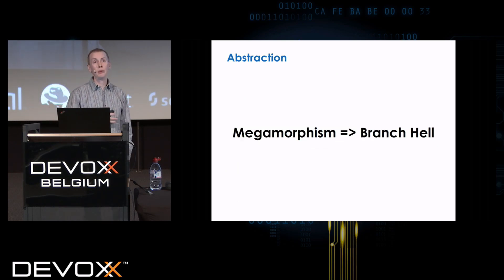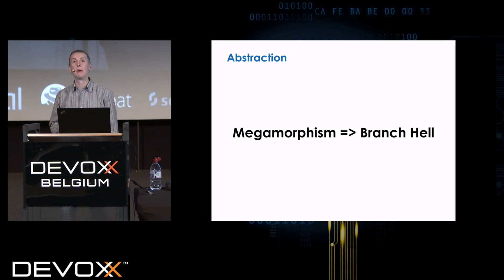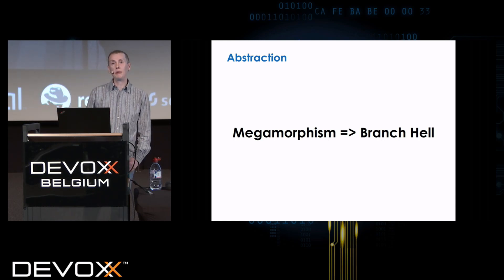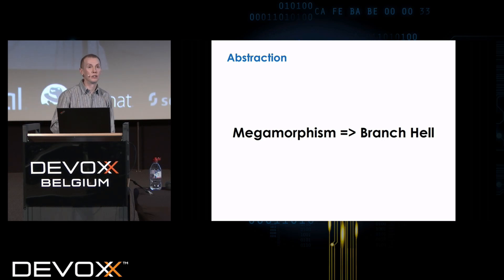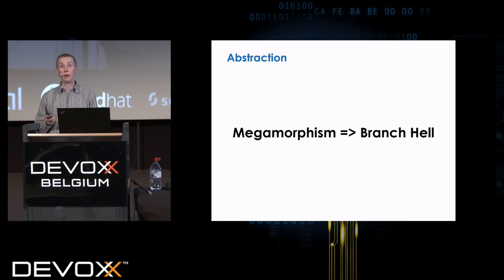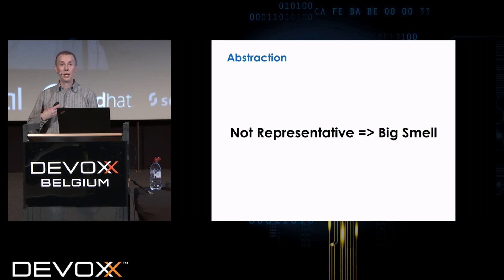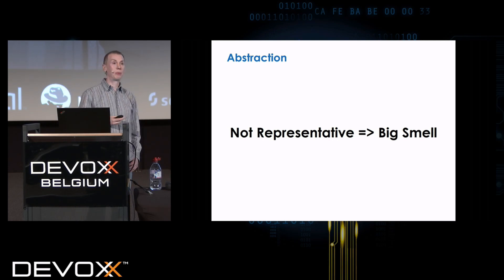If we go down the over-abstraction route, we're into a kind of interesting world where as soon as you get many of a certain type, we're into megamorphism — and this is one of the things that our compilers and hardware have quite a lot of difficulty dealing with. Once you start dealing with three or more types, it becomes really difficult — we end up with jump tables, certain optimizations become quite limited. This doesn't suit how our modern processors work. And if it's not representative, it's the wrong thing to be doing. There are so many abstractions that are just plain wrong.